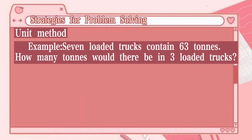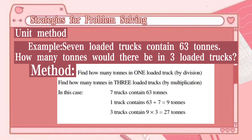7 loaded trucks contain 63 tons. How many tons would be in 3 loaded trucks? The method is: find how many tons in 1 loaded truck by division, then find how many tons in 3 loaded trucks by multiplication. So, 7 trucks contain 63 tons, meaning 1 truck contains 63 ÷ 7 = 9 tons. Therefore, 3 trucks contain 9 × 3 = 27 tons.